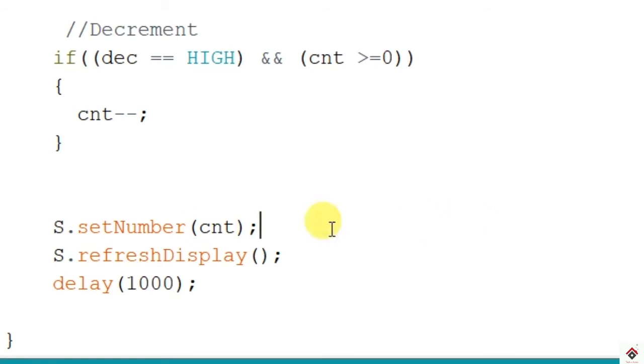That's it. And here, instead of i, I will just be displaying this value which is stored in the variable count. And delay we can keep less.